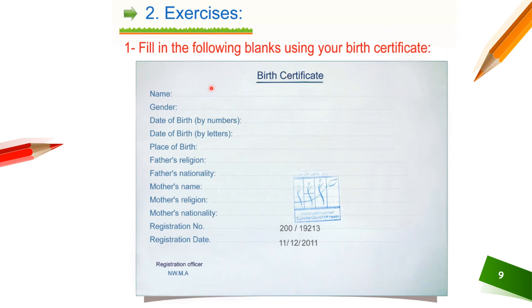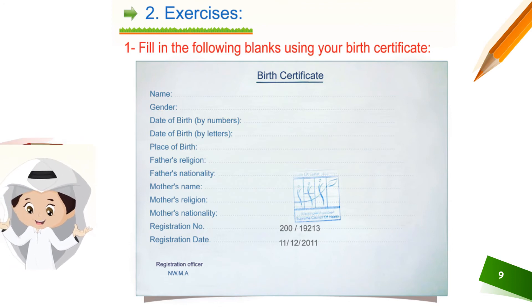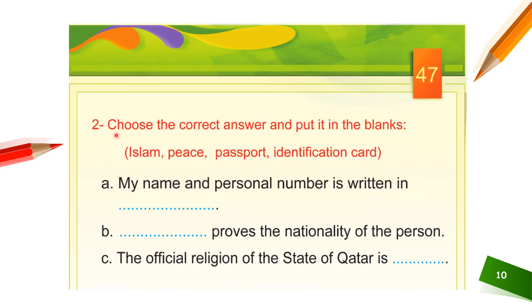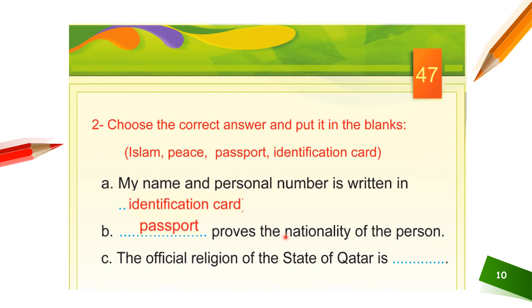Now choose the correct answer and put it in the blanks. Your options are: Islam, peace, passport, identification card. The first one: my name and personal number is written in — in which document can you see your name and personal number? Identification card. Next, what proves the nationality of a person? Passport. The official religion of the State of Qatar is Islam.